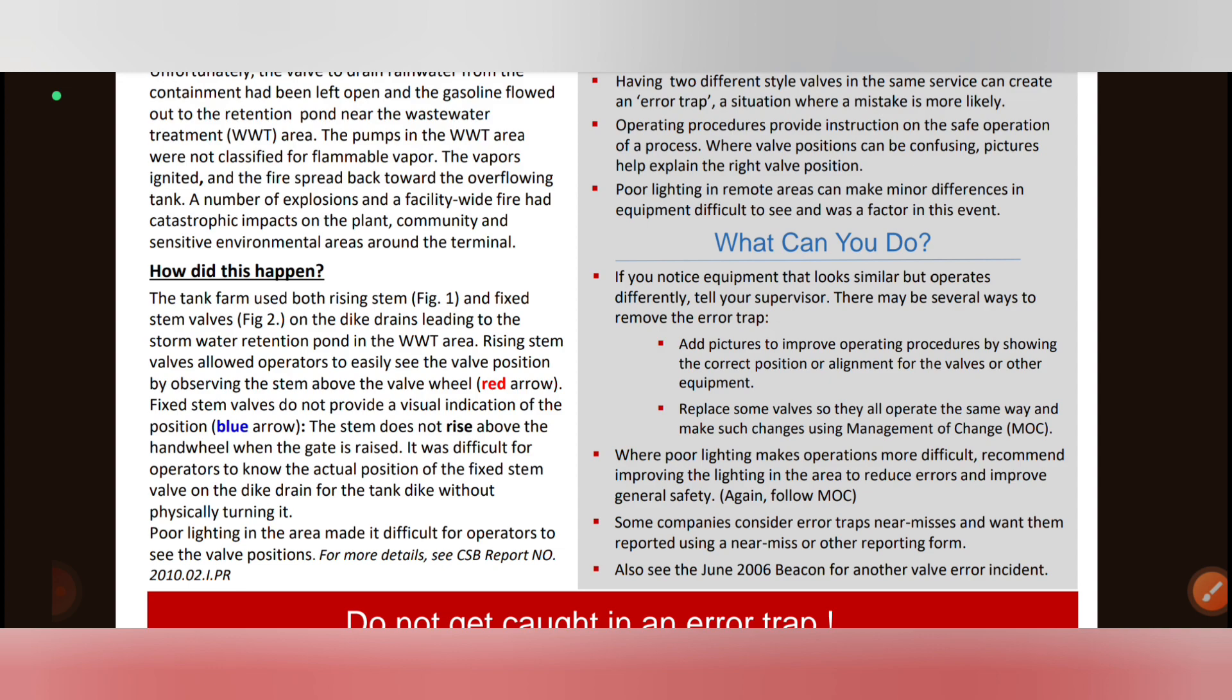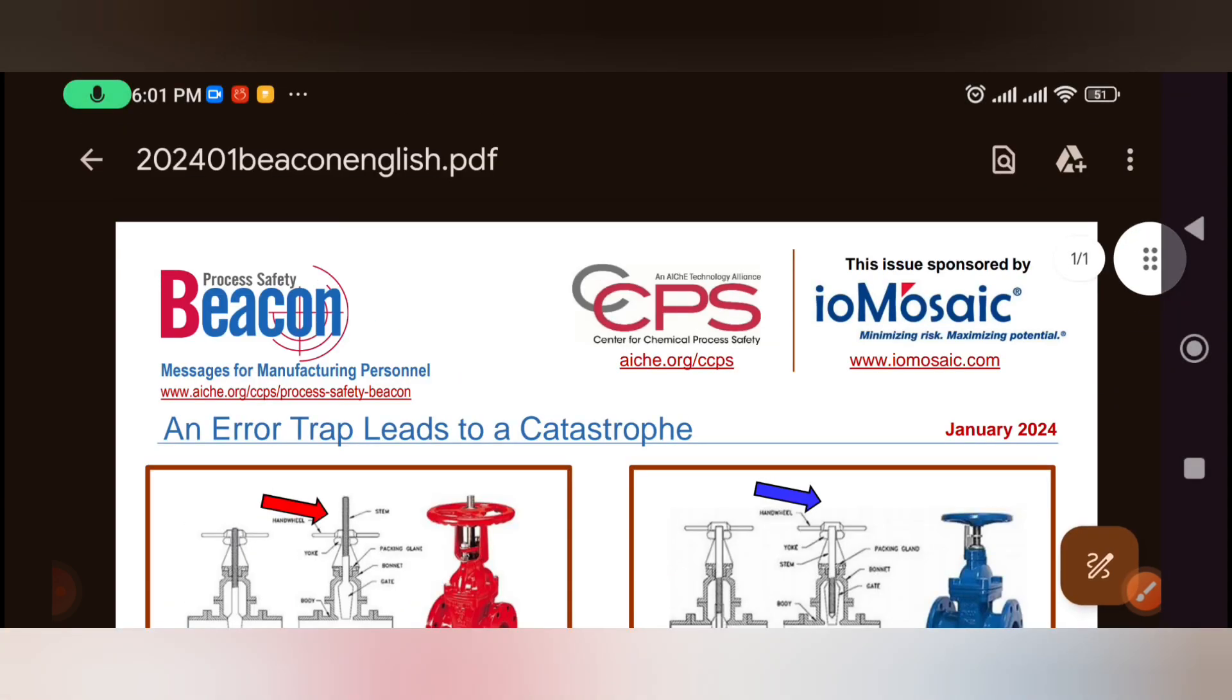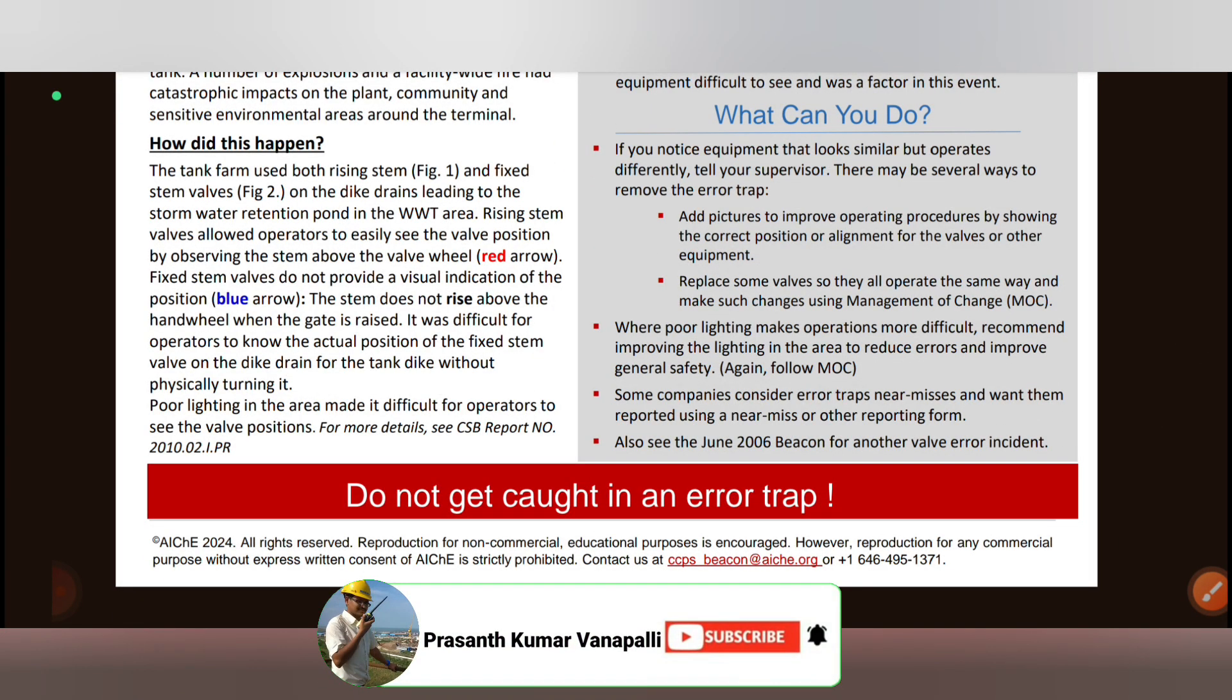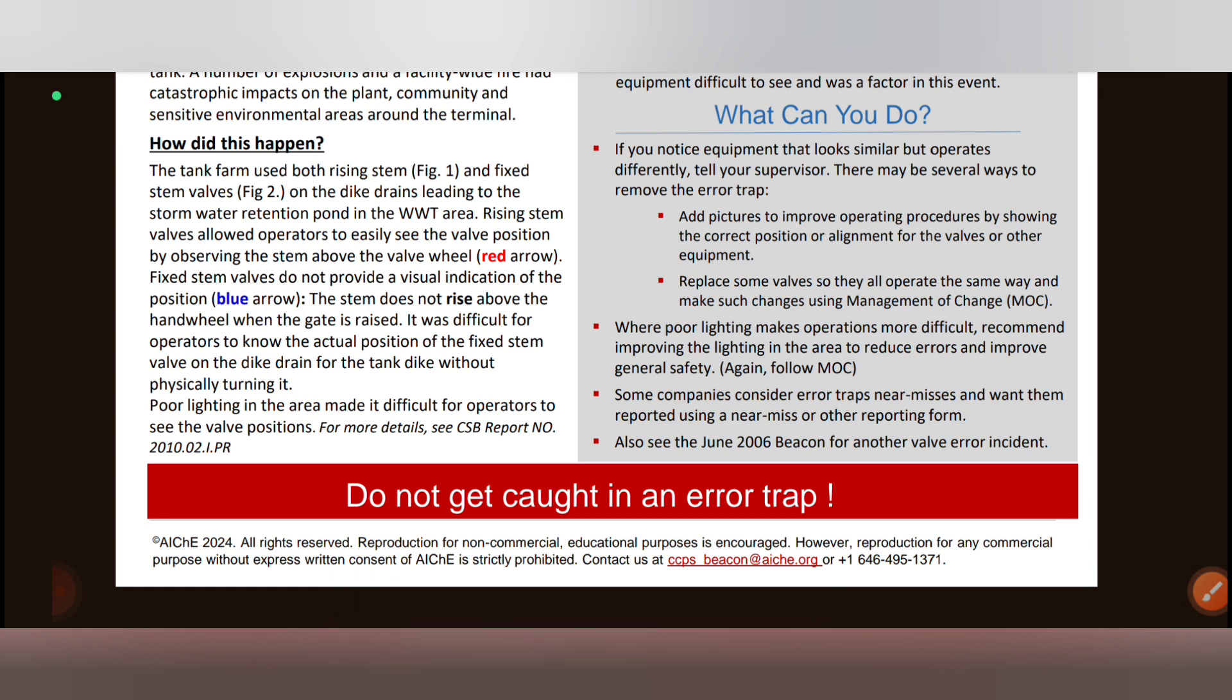What happened? The tank farm has two valves on the dike-drain. Red-color rising stem, blue-color non-rising stem. The rising stem is easy to identify if the valve is closed or open. The non-rising stem valve, when the operator looks at it, you can't see if it's open or closed. The mistake is that during night and evening time, the valves are very difficult to identify. The poor lighting makes it difficult.